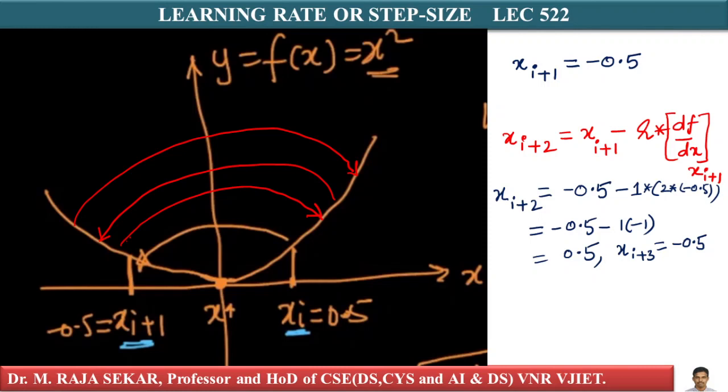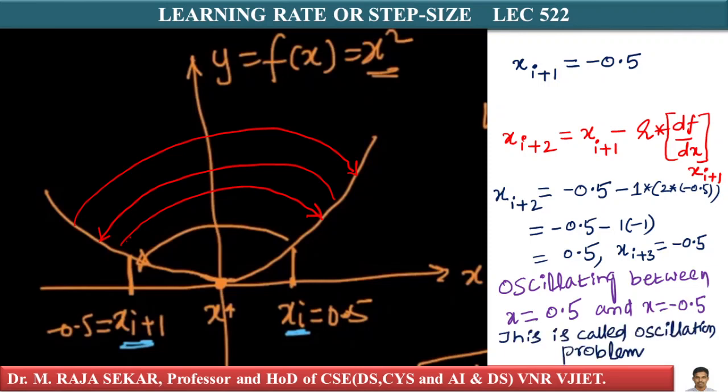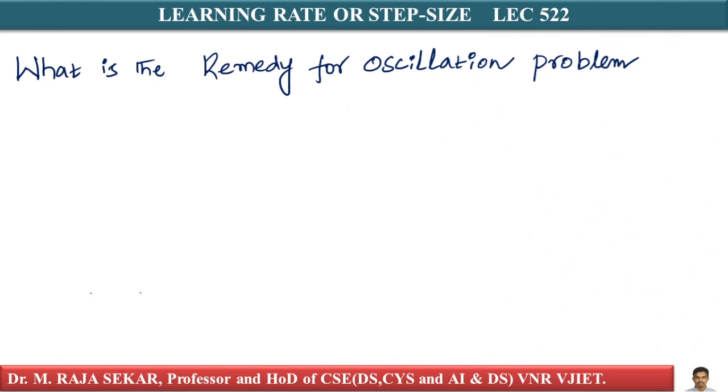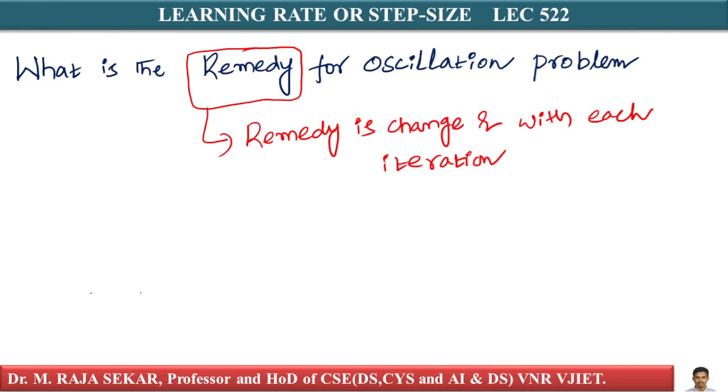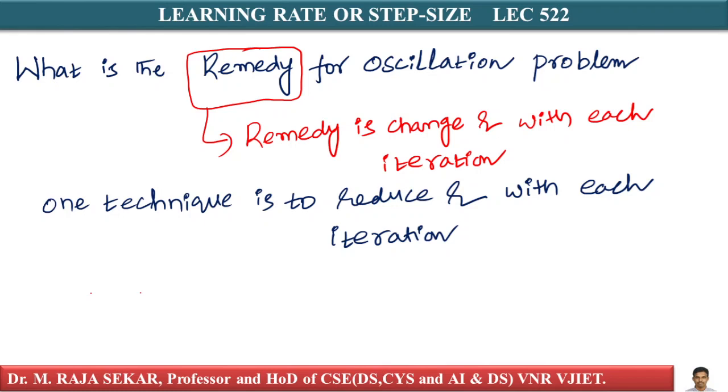What is the remedy to this problem? What is the remedy for oscillating? This is called the oscillation problem. The remedy is you change r with each iteration. You somehow change your learning rate or step size with each iteration. One simple technique is to reduce r with each iteration.